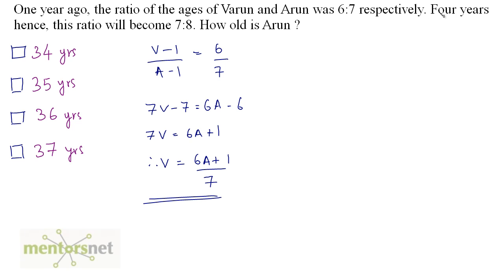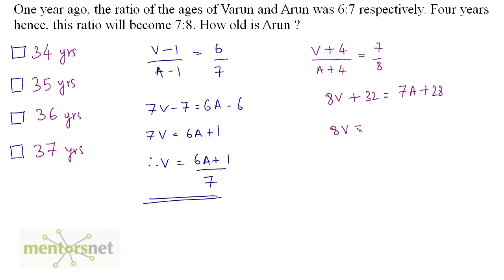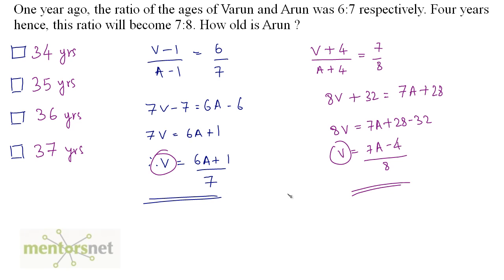4 years hence, V plus 4 over A plus 4 equals 7 by 8. Cross-multiplying: 8V plus 32 equals 7A plus 28. So, 8V equals 7A minus 4. Therefore, V equals (7A minus 4) by 8. Since both expressions equal V, we equate: (6A plus 1) by 7 equals (7A minus 4) by 8.